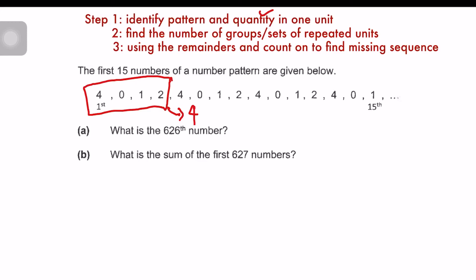So step number 2, find the number of groups. So you would take 626, which is the total, divided by 4. You will get 156 with remainder 2. And the next step, remember, we are going to deal with the remainder, because there are 156 of these groups. And they want to know the 626 number, the particular one. So looking at the remainder, the first one is 4. The second one is digit 0. So my answer to A is 0. Question A done. And usually that question is 1 mark.